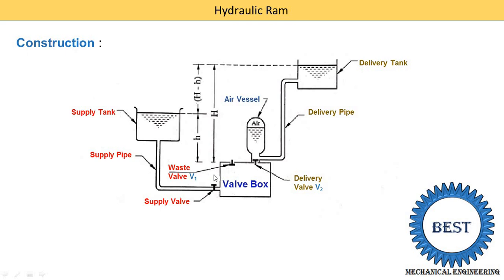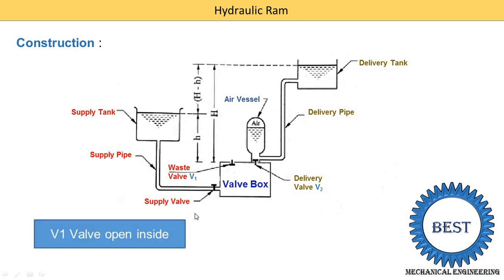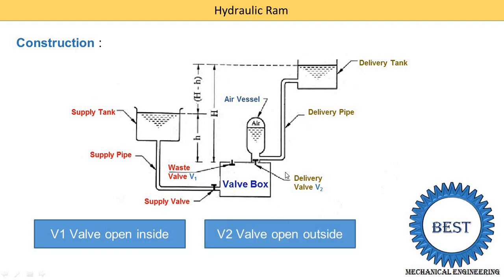Now, we need to understand the two important valves: the waste valve V1 and the delivery valve V2. Both valves are one-way valves, meaning flow is only in one direction. The waste valve opens inward and closes when it moves upward. The delivery valve opens outward — that is, towards the air vessel — and closes the flow of water when it moves in the downward direction.